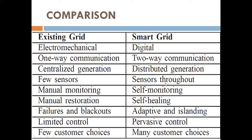Existing grid monitors in a manual manner, but smart grid is self-monitoring. Existing grid requires manual restoration if a problem occurs, while smart grid is self-healing. Existing grid is prone to failures and blackouts, but smart grid will be adaptive and islanding will be there. Existing grid has limited control while smart grid has pervasive control, and existing grid has few customer choices while smart grid has many customer choices.